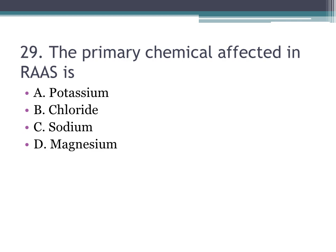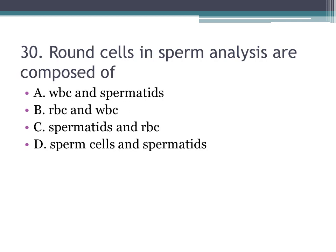Number twenty-nine: the primary chemical affected in RAAS — A. potassium, B. chloride, C. sodium, D. magnesium. The correct answer is C, sodium. RAAS (renin-angiotensin-aldosterone system) is activated by decreased blood pressure, increased potassium, or decreased sodium. The primary goal is to increase sodium retention and increase blood pressure.